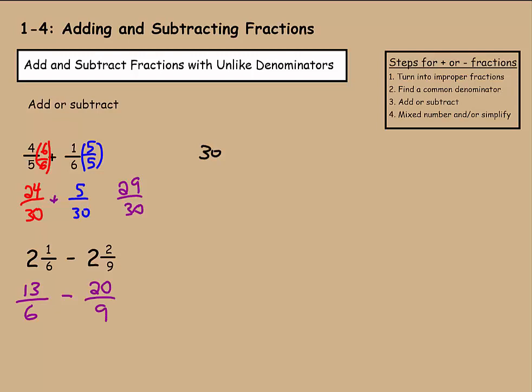Step 2 is find a common denominator. I know that 9 goes into 36, as does 6. Remember, if you can't figure that out right away, just multiply them together to find your common denominator. But I'm going to go with 36. 6 goes into 36 six times, so we'll do 6 over 6. 9 goes into 36 four times, so we'll do 4 over 4. So 13 times 6 gives me 78. 6 times 6 is 36, just what I wanted. Now we have 20 times 4, which is 80. And 9 times 4, which is 36, what I wanted too.